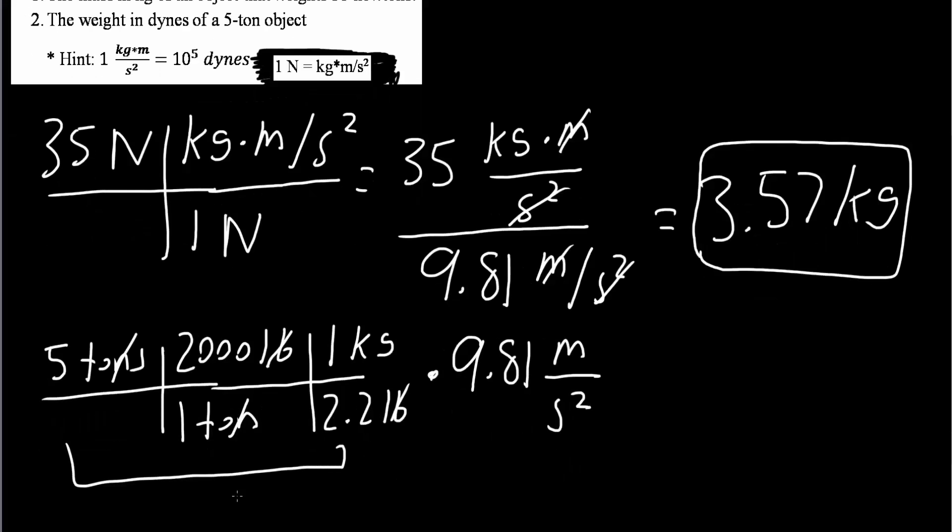this right here is mass, and this right here is gravity. And so now we have kilograms times meter divided by seconds squared.